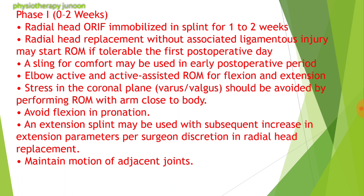Phase 1 is from 0 to 2 weeks for radial head open reduction and internal fixation. Immobilization in a splint is used for 1 to 2 weeks. Radial head replacement without associated ligamentous injuries may start range of motion if tolerable from the first post-operative day. A sling for comfort may be used in the early post-operative period. Elbow active and active-assisted range of motion for flexion and extension is initiated, and stress in the coronal plane — varus or valgus — should be avoided by performing range of motion with the arm close to the body.